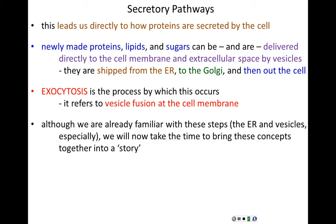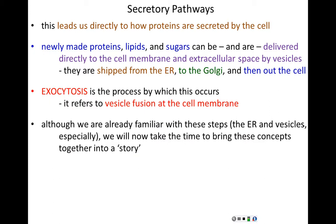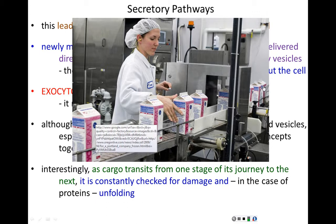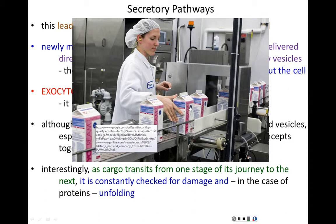Exocytosis is the process of vesicle fusion at the cell membrane. As cargo transits from one stage of its journey to another, it is constantly modified and monitored — more importantly checked for damage, and specifically for proteins checked for unfolding. Any cargo deemed unacceptable — which is actually the majority of things being shipped — is sent back up the chain, routed to endosomes, then to lysosomes, and degraded and recycled so it can try again.